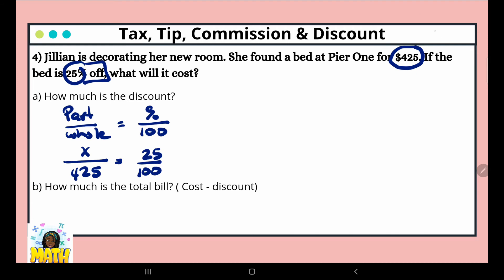Now we're going to cross multiply: 100 times x, 425 times 25. This gives us 100x equals 10,625. And we're dividing again by 100. So x equals $106.25.